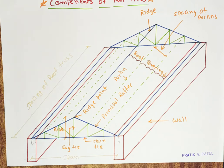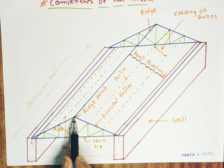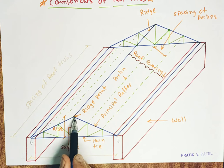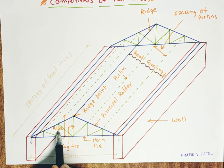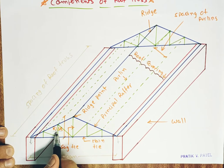Then after these are the members of the truss where this vertical one is sag tie and the distance of this apex till here is rise. It is written over here rise R-I-S-E.